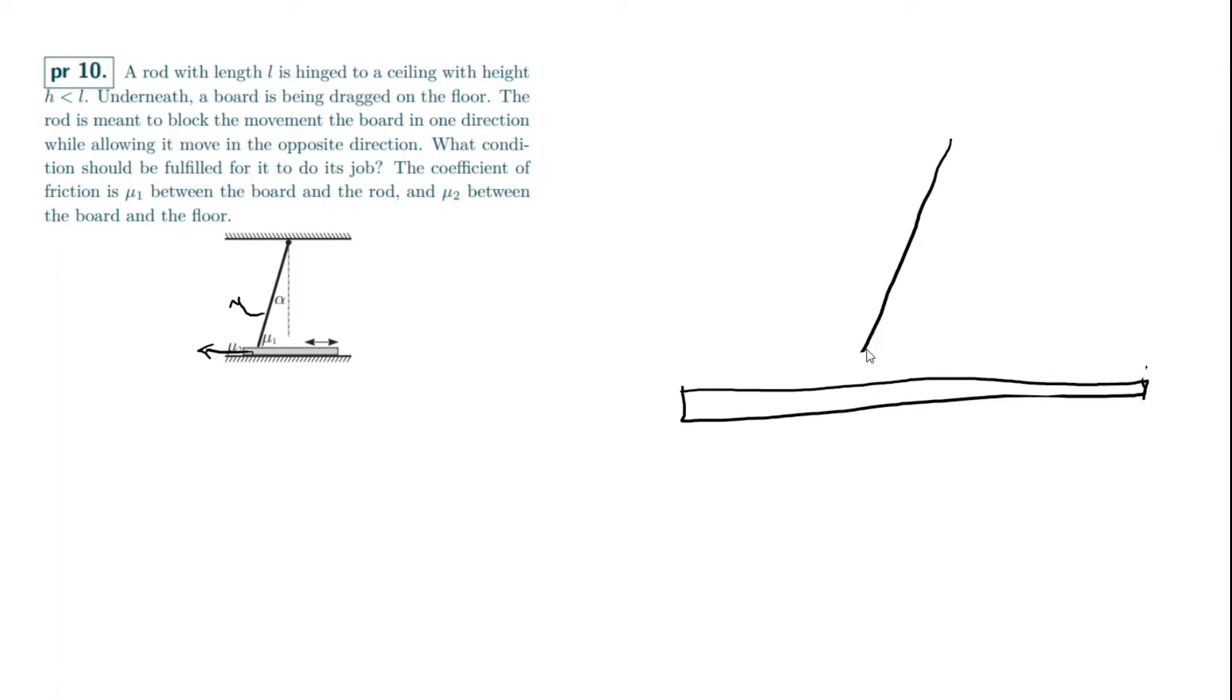But if we were to put it here, and this was able to continue moving in this direction, because the height actually restricts the motion, what would need to happen is this would need to swing this way. The hinge would need to swing this way. So for it to do its job, if we just analyze forces on this rod, the rod has to be pushed this way. Because if it's pushed this way, then this won't be able to move because it would start breaking the rod or whatever.